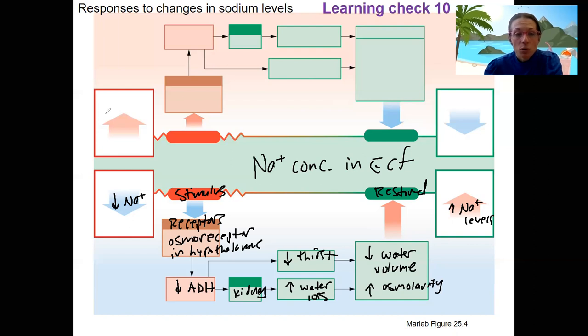I would like you to diagram the increased sodium, which is going to then restore a decreased sodium level. And I think you've got everything you need to do that. So the change in sodium is compensated in part by a change in volume. This is learning check 10, by the way.